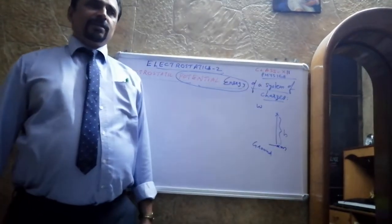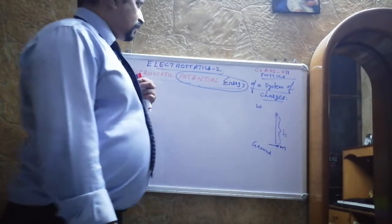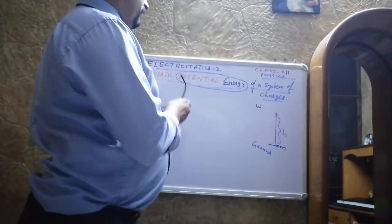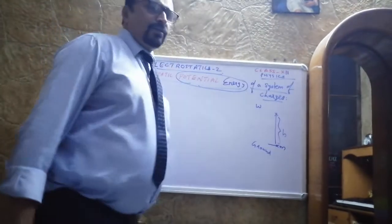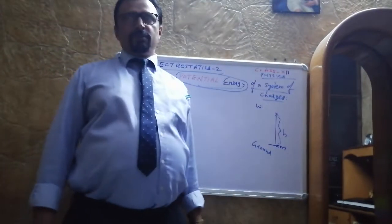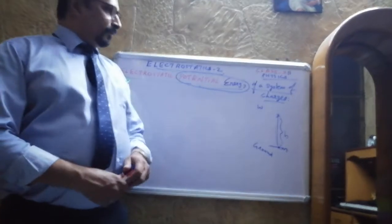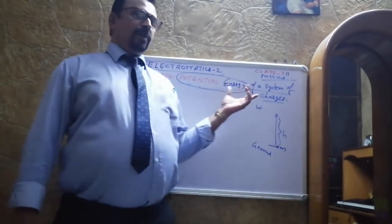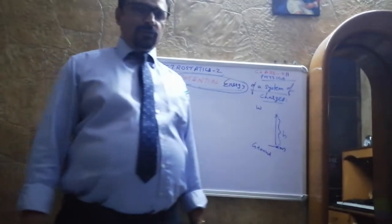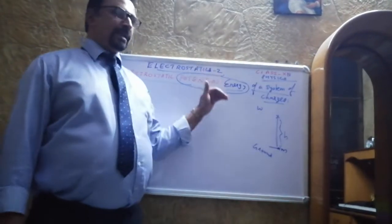Good morning students. In the previous class we studied about electric potential — how you define electric potential: the work done to displace unit positive charge from infinity to a point is called electric potential. We also studied the expression for electric potential at any point due to an electric dipole. Today we are moving to the next level of the chapter, which is called electrostatic potential energy of a system of charges.